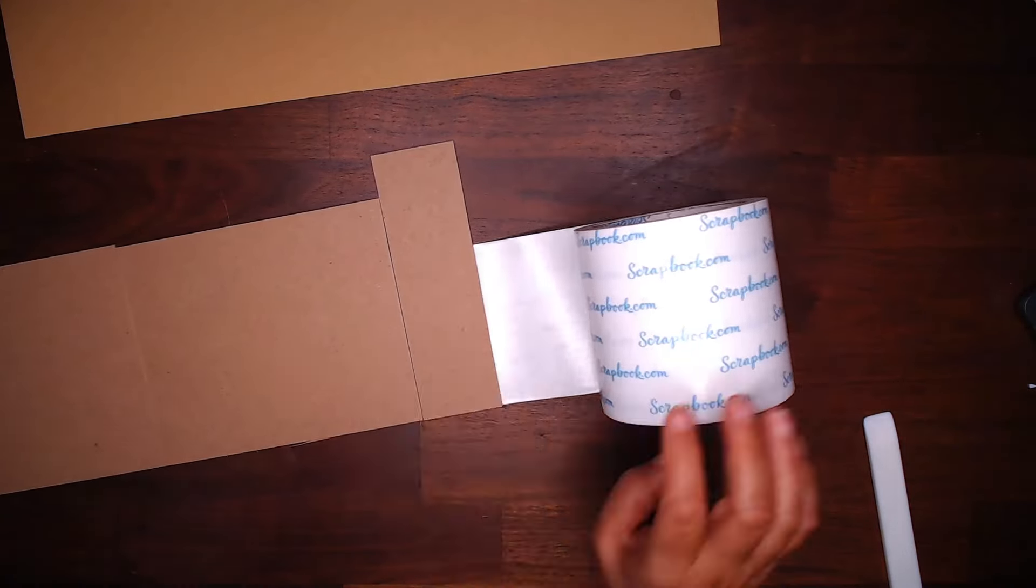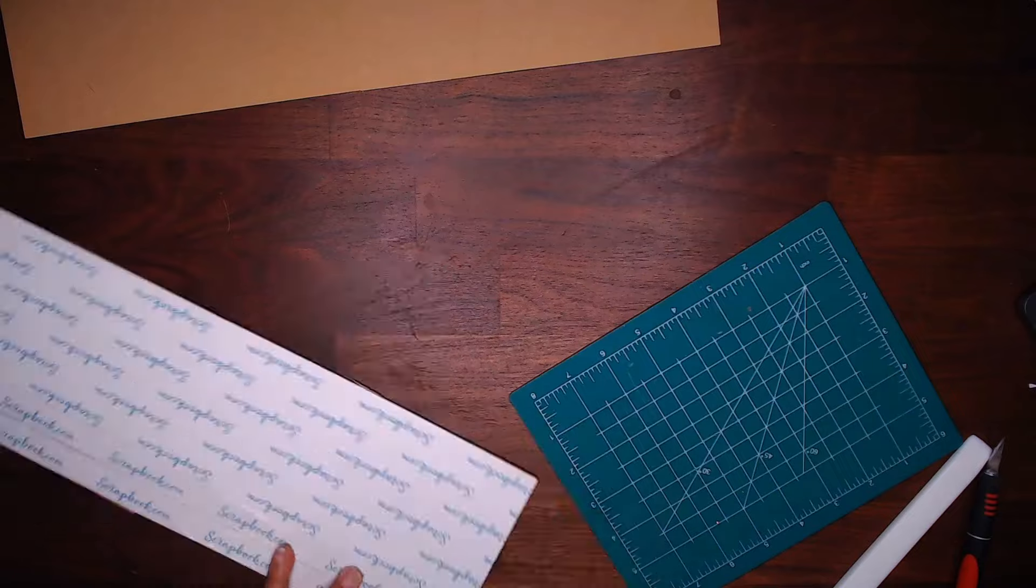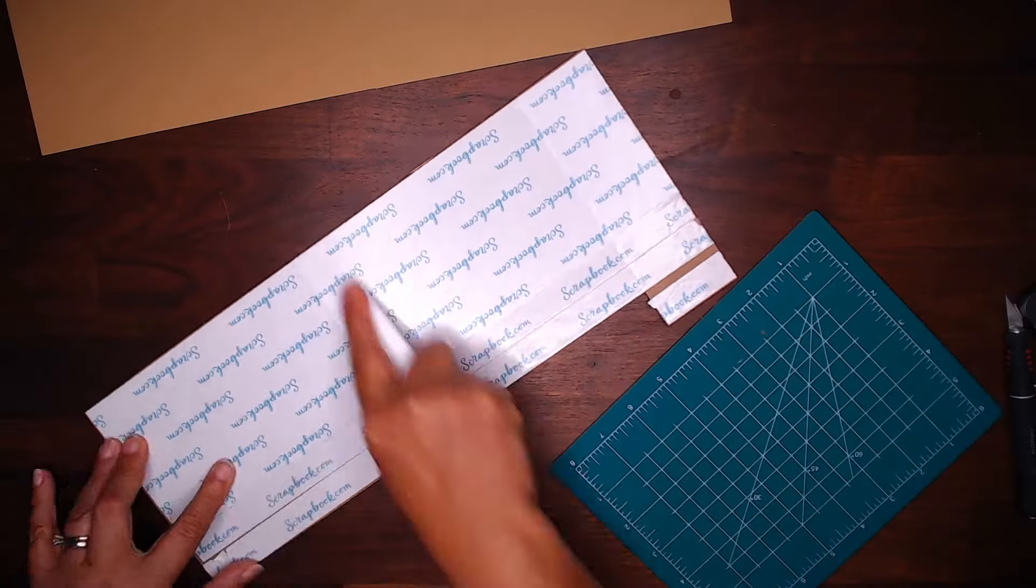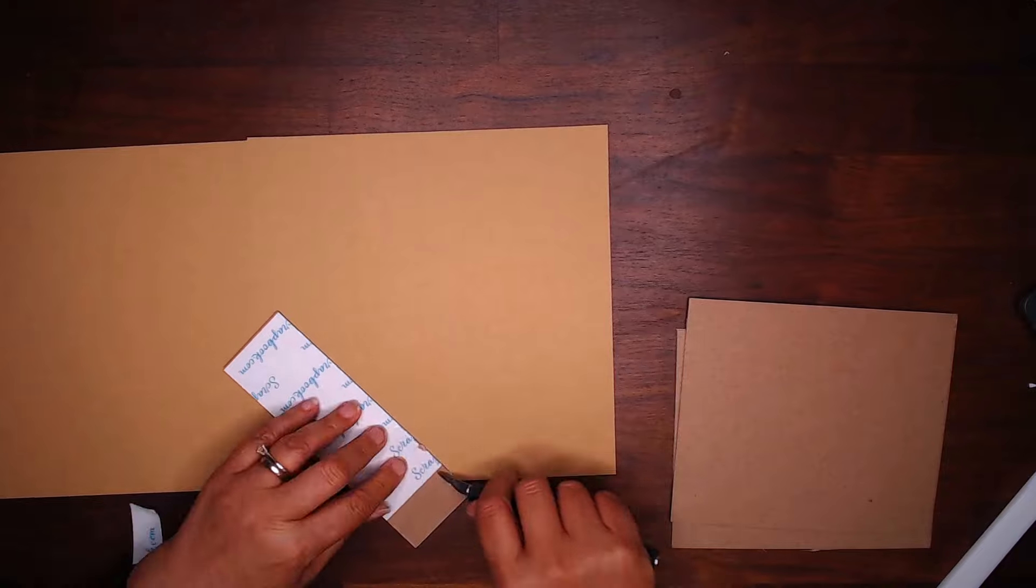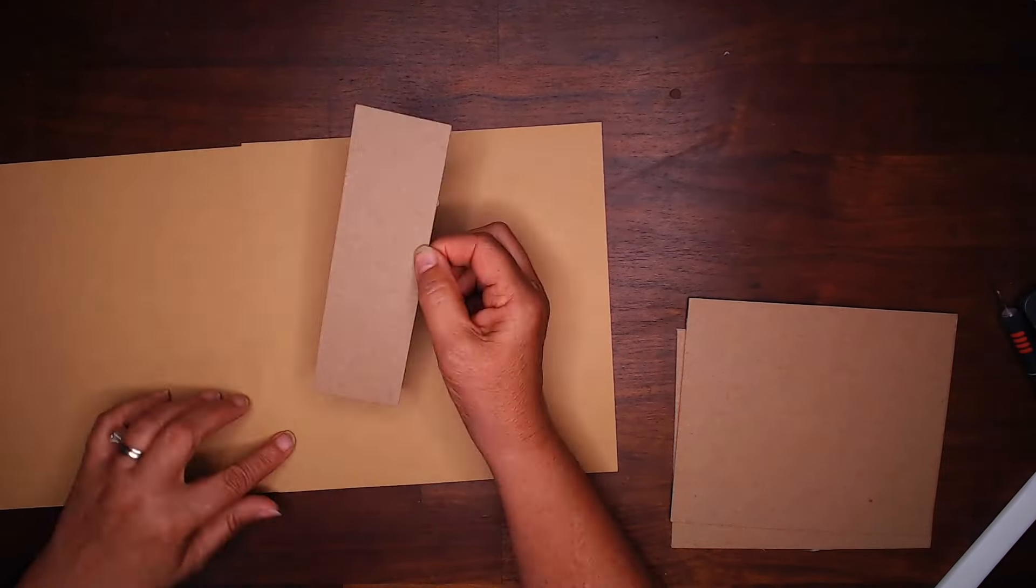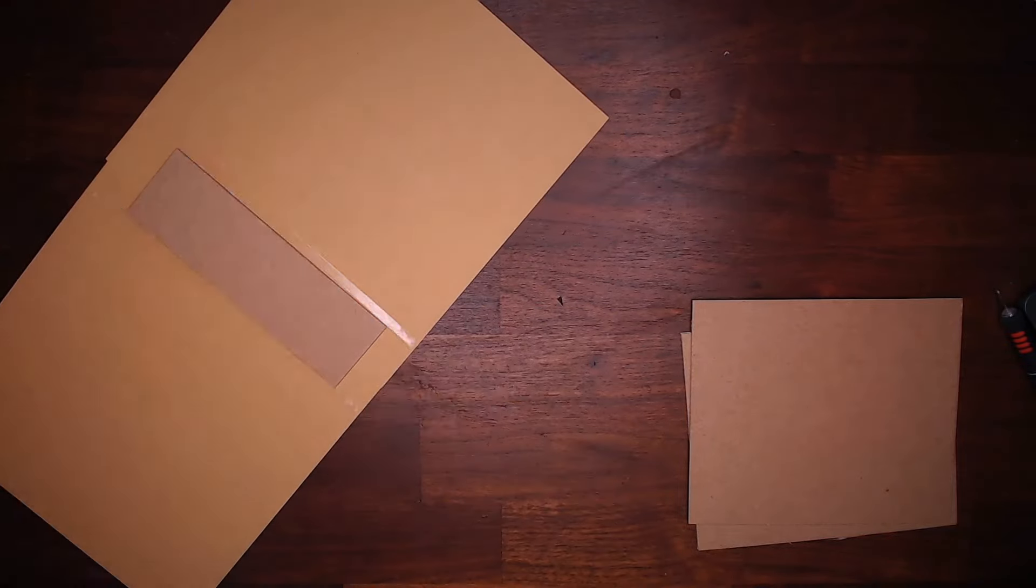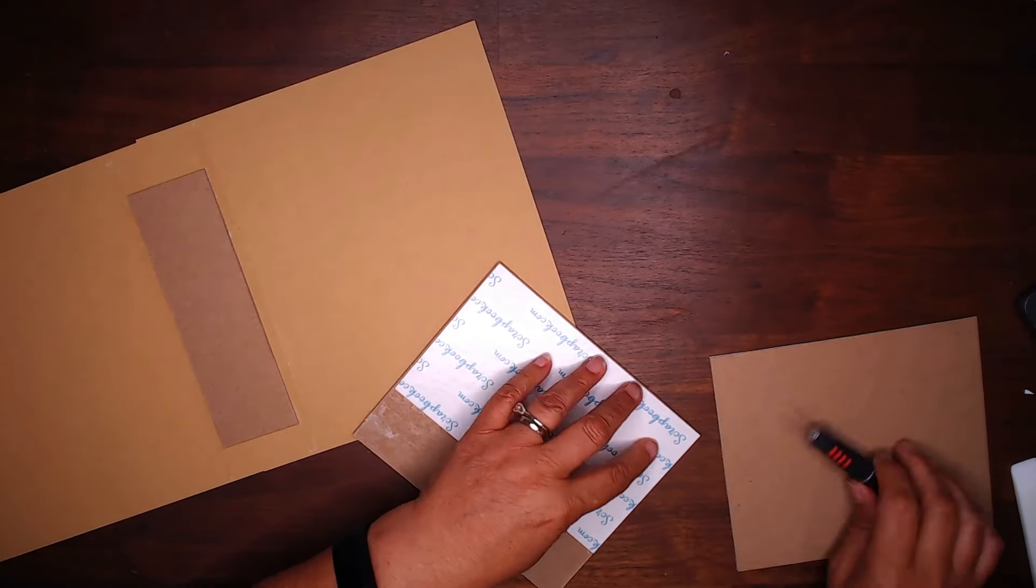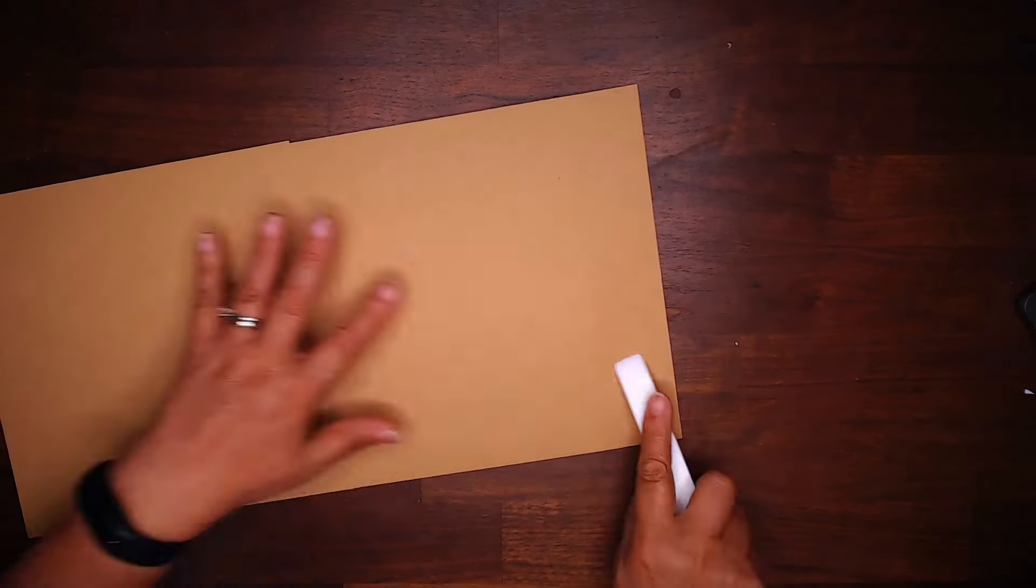I'm going to cover these pieces with some double-sided permanent adhesive, and then I will cut these three pieces apart, and I will lay them on my cardstock that I've already spliced two pieces together. Again, there is another video that shows you in greater detail. I'm just showing you how quick and easy it is to make a little mini album.